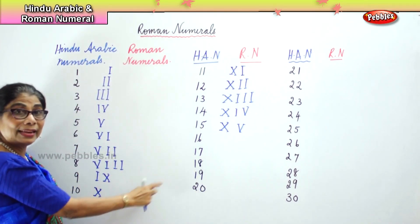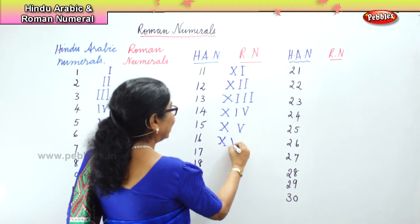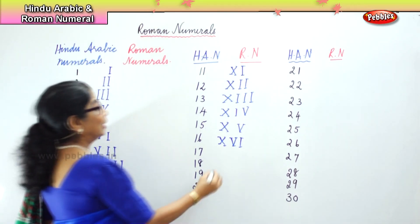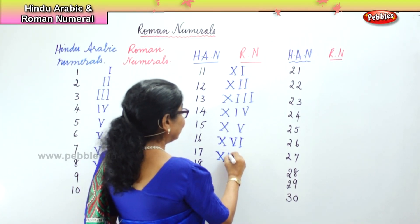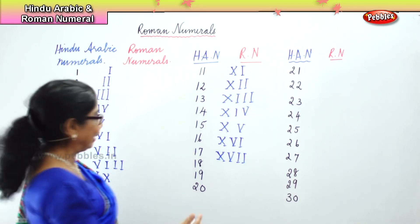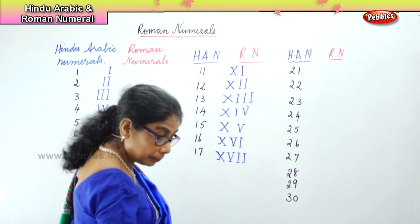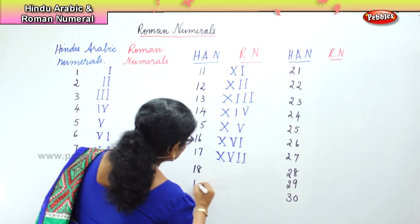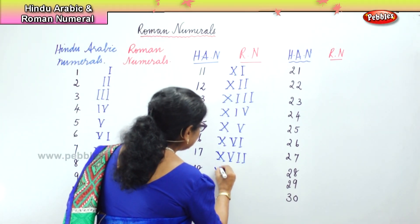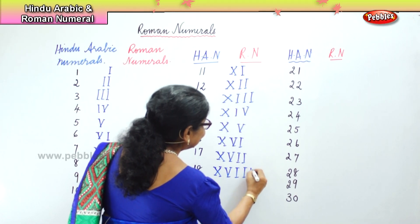Sixteen, seventeen, eighteen — you follow the same pattern. Ten, then five gives fifteen, now you get sixteen. Same thing for seventeen and eighteen. Eighteen: you have ten, five gives fifteen, sixteen, seventeen, and you are at eighteen.